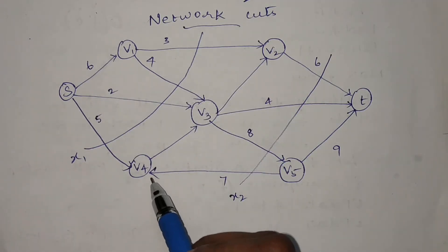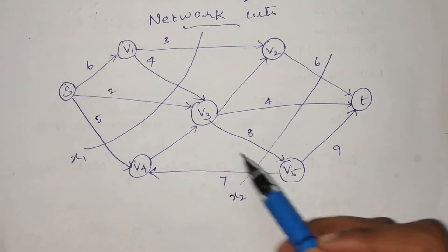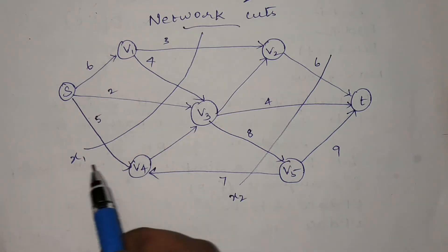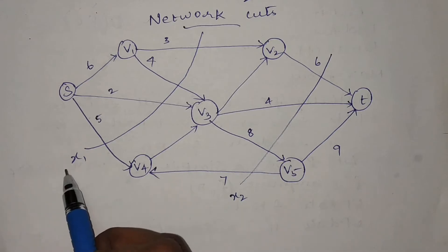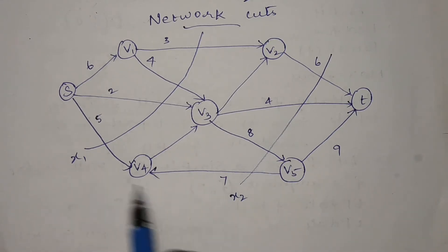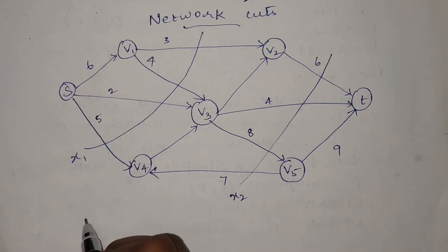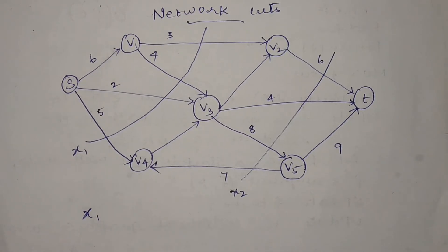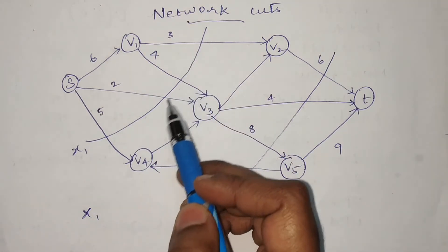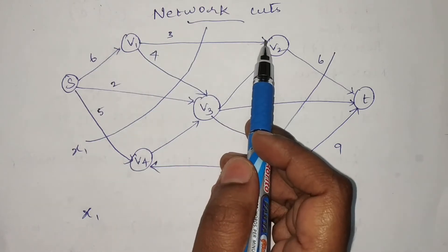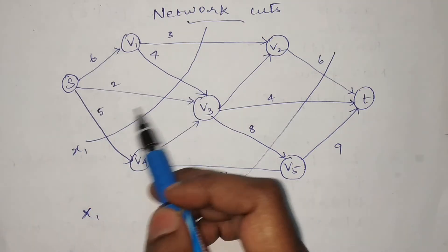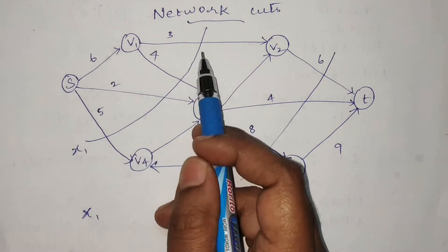In this given SD graph we have two cuts: one is represented as x1 and the next cut is represented as x2. We need to calculate the capacity value of x1 and x2 separately. For cut x1, we check which edges this cut has been enabled on — those are v1 to v2, v1 to v3, s to v4, and s to v3, so the cut is enabled on all four of these edges.